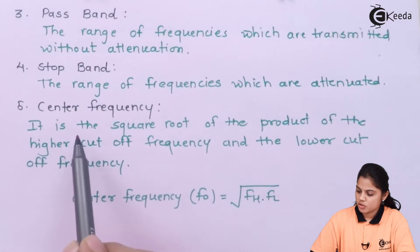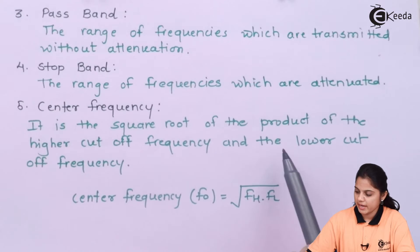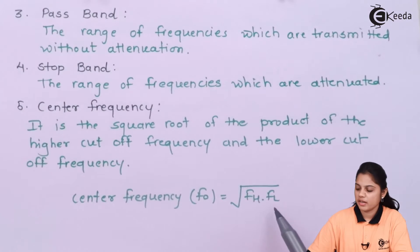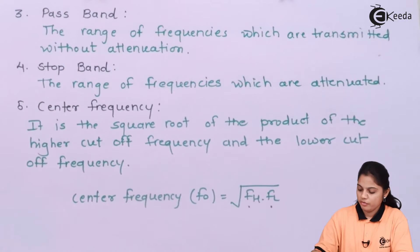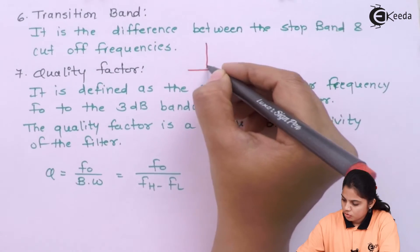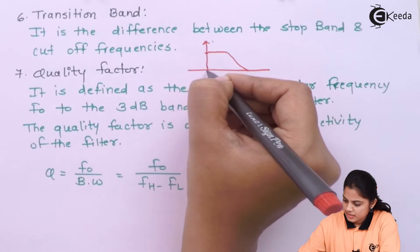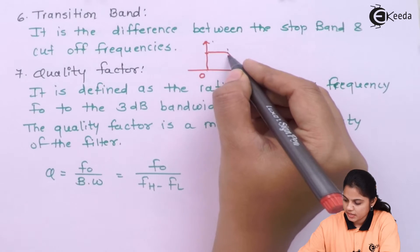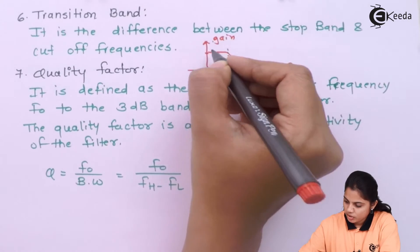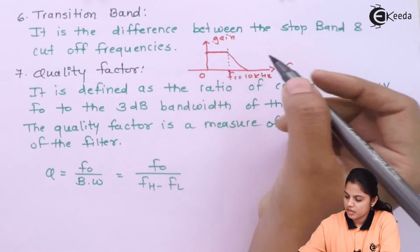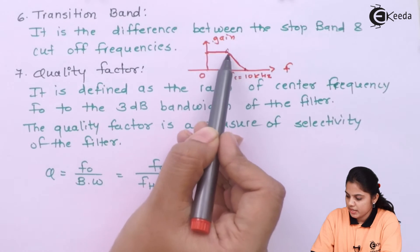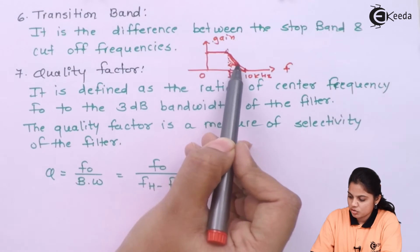Fifth is center frequency — it is the square root of the product of the higher cutoff frequency and the lower cutoff frequency. So if you take the root of the product of FH and FL, that is the center frequency. Transition band is the difference between the stop band and the cutoff frequency. For a low pass filter with a cutoff frequency of 10 kHz, the gain is maximum up to that point, but after it the signal attenuates. The region where the gain is transitioning from its maximum to its attenuated level is known as the transition band.